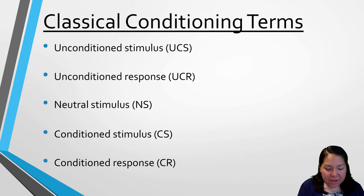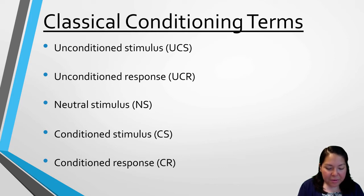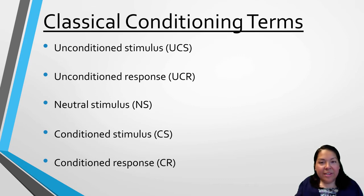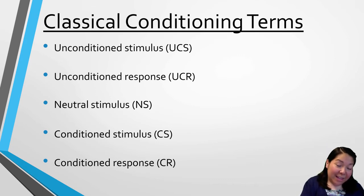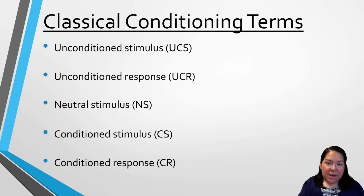The neutral stimulus is a stimulus that does not produce a reliable response, such as the bell. The bell, before being paired with the food, typically does not produce any response from Pavlov's dogs. The conditioned stimulus is a stimulus that is initially neutral and produces no reliable response in an organism. After pairing the neutral stimulus with the unconditioned stimulus, it then becomes a conditioned stimulus — so the bell, initially the neutral stimulus, is paired with the food over and over again.